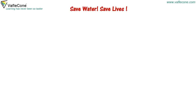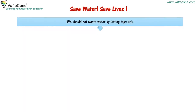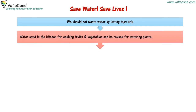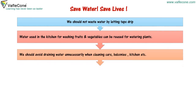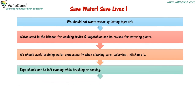Safe water saves lives. We should not waste water by letting taps drip. Water used in kitchens for washing fruits and vegetables can be reused for watering plants. We should avoid draining water unnecessarily when cleaning cars, balconies, kitchen, etc. Taps should not be left running while brushing or shaving.